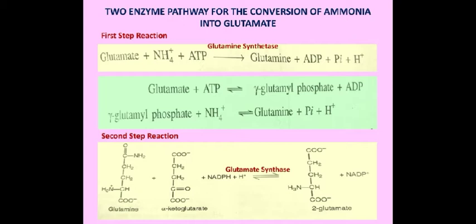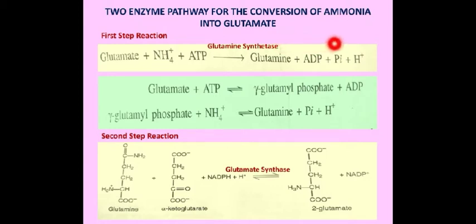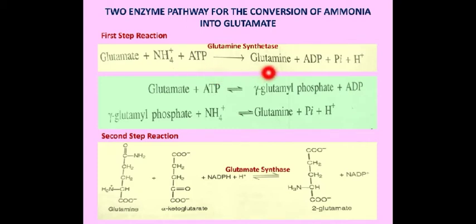The two-enzyme pathway consists of a two-step reaction. In the first step, glutamate combines with ammonia in the presence of one molecule of ATP and the enzyme glutamine synthetase, converting glutamate into glutamine, with ATP converted to ADP plus inorganic phosphate. This reaction occurs in two sub-steps: glutamate first binds ATP to form an intermediate gamma-glutamyl phosphate plus ADP, and this gamma-glutamyl phosphate then reacts with ammonia to form glutamine.